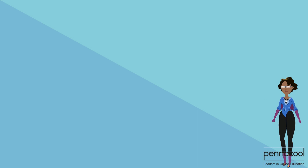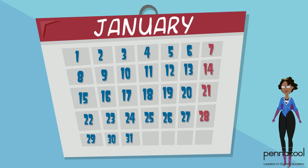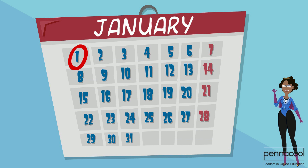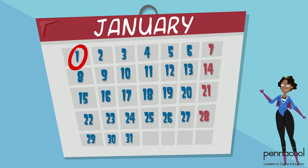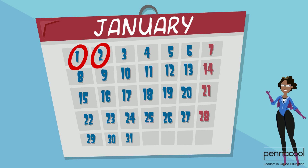Another great example of ordinal numbers are the days of the month and how we read them. January 1st — that's the first day of January, followed by January 2nd, which is the second day of January.